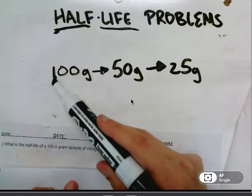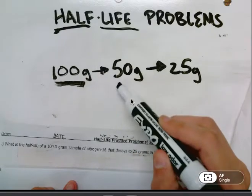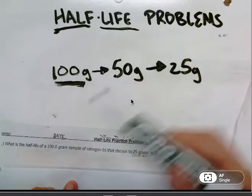If I start off with 100 grams of something radioactive, after one half-life I would have 50 grams remaining. The other 50 grams have decayed into something else.